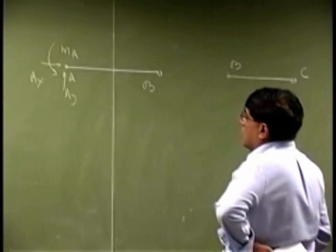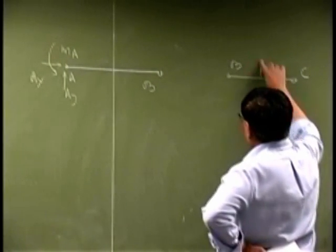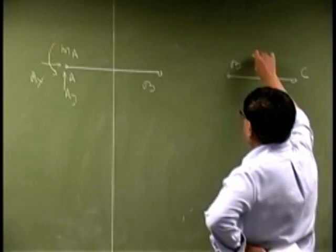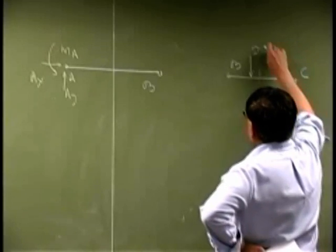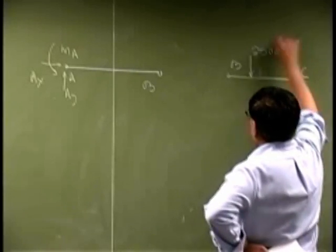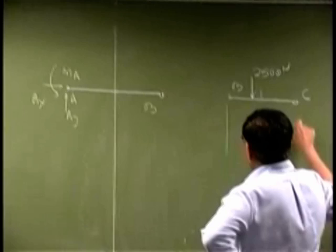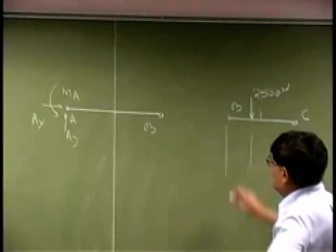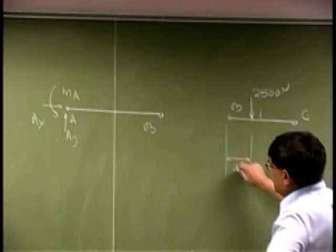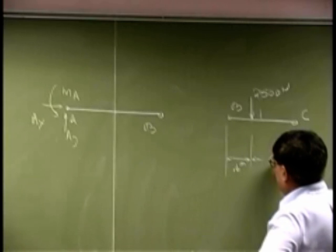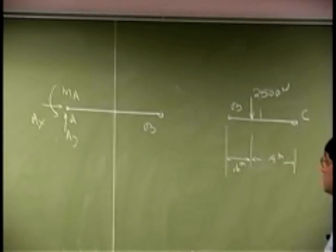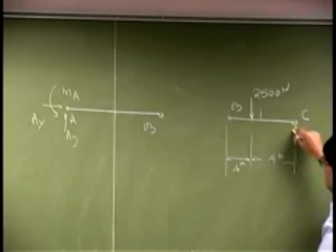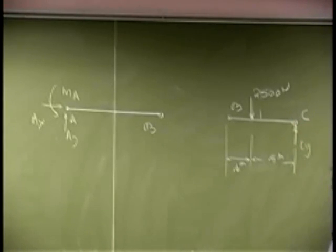Then we have the force here, 2500 N, and the distances known. This is 0.6, this is 0.9. Then on the top of that, we got the reaction and that's CY. So that's just the two parts.